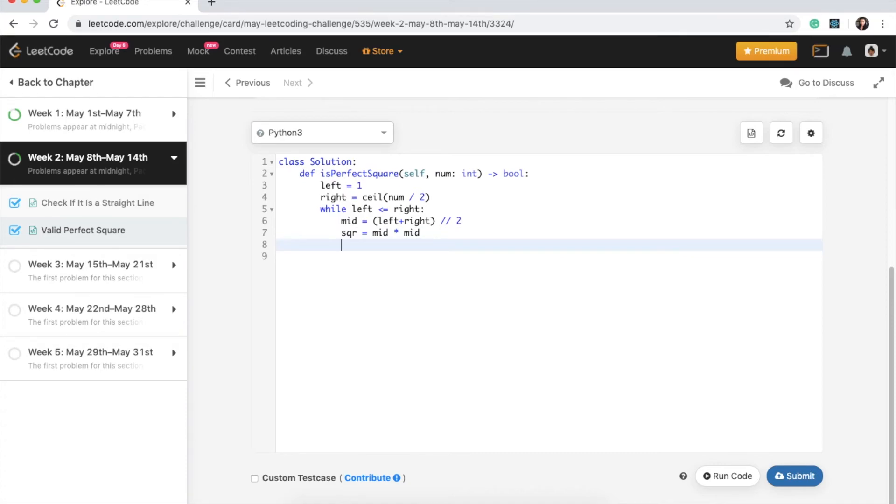And then we just need to check if this square is equal to our target num. So if square equals num, well in that case, we can just go ahead and return true. Okay, else we need to control our boundaries. So if the square is less than num, then we need to adjust our left side. So left equals mid plus 1. And else we need to adjust the right side, so else right equals mid minus 1. And if we can't find the number, then what we're going to do is go ahead and return false.